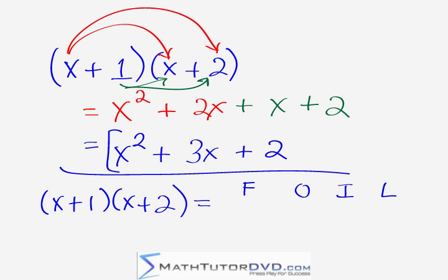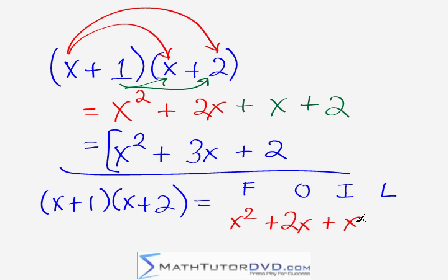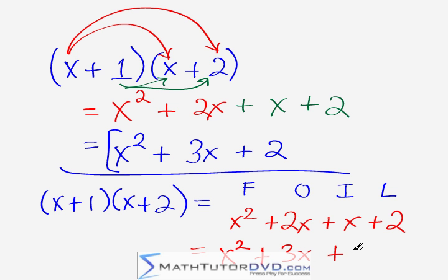Let's double check that this gives us the right answer. The first terms multiplied together gives you x times x, which is x squared. The outside terms give you x times 2, which is 2x. The inside terms give you 1 times x, which is just x. And the last terms give you 1 times 2, which is just 2. Then when we add all this together, x squared stays the same, 2x plus x gives you 3x, and the 2 stays along for the ride.